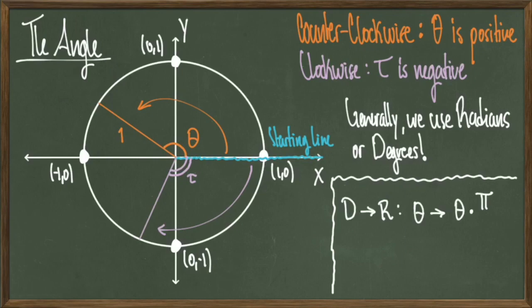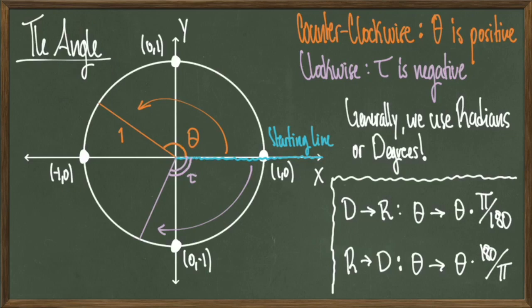When looking at the unit circle, our angles are going to be expressed one of two ways: degrees or radians. We'll talk about what these mean in a later slide — basically they're two languages for representing angles, and you can always convert from one form to the other. If I have an angle in degrees converting to radians, I multiply by pi over 180. And if I have an angle in radians converting to degrees, I multiply by 180 over pi.